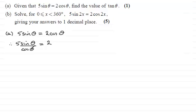If we do that we have 5sinθ/cosθ = 2. And sinθ/cosθ is tanθ. So we have 5tanθ = 2. Dividing both sides by 5, we get tanθ = 2/5.